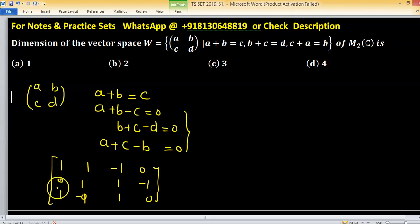And check that number of pivots that tell you how many conditions are linearly independent. So dimension will be four minus number of linearly independent constraints or conditions.